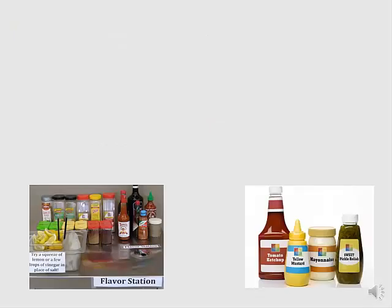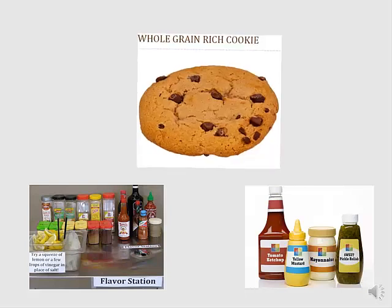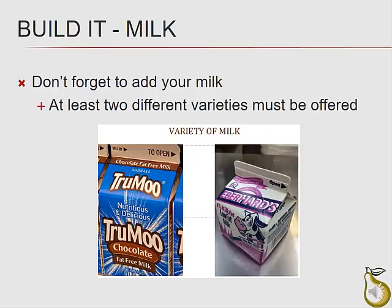One great choice that we'll incorporate in our proposed menu is a flavor station. You can offer students herbs and salt-free seasonings to add flavor without increasing the sodium. Let's go ahead and offer a treat and add a whole grain-rich chocolate chip cookie. Don't forget to add your milk. Remember that you must offer at least two different varieties of milk at each meal.